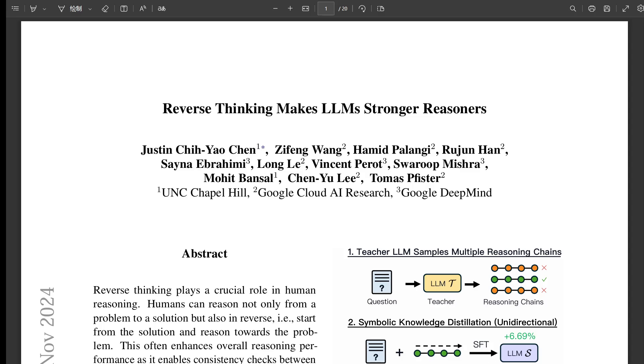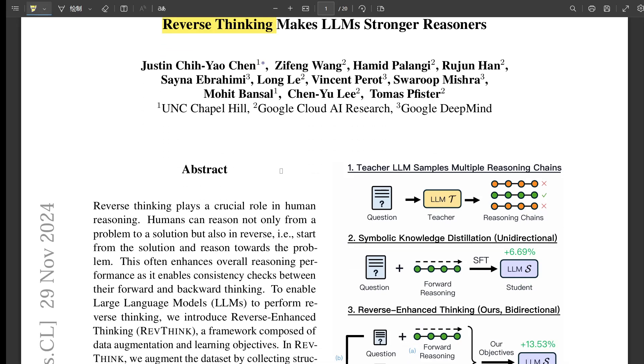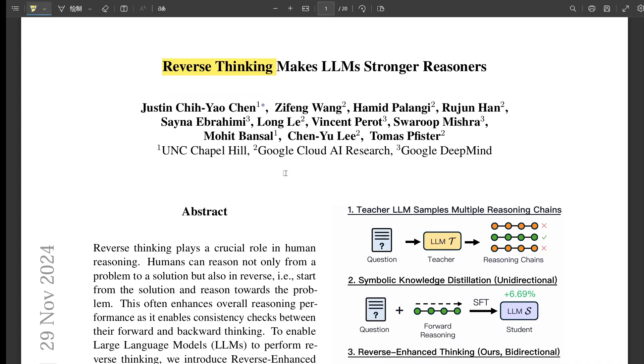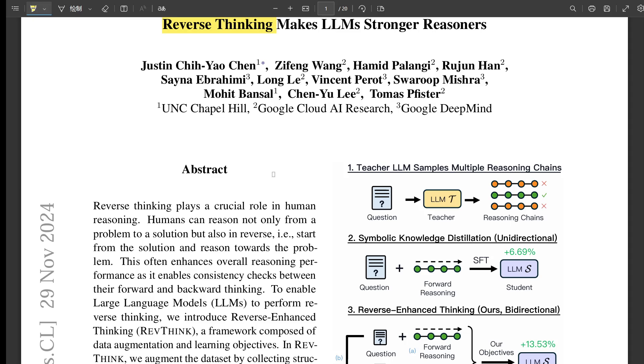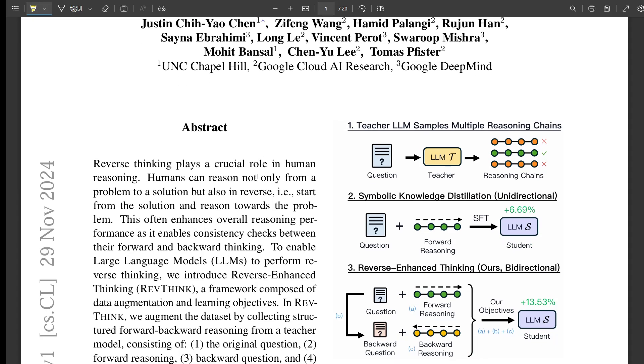You can actually make AI better at reasoning by teaching it to think backward. It's kind of like when you're double-checking your work, but instead of retracing your steps, you're working backwards from the solution to see if it all still makes sense.